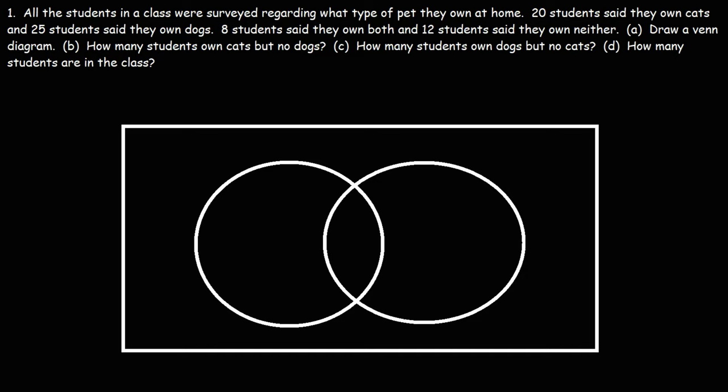In this video, we're going to focus on solving problems associated with Venn diagrams. So let's start with this one. All the students in a class were surveyed regarding what type of pet they own at home. 20 students said they own cats, and 25 said they own dogs. 8 said they own both, and 12 students said they own neither.